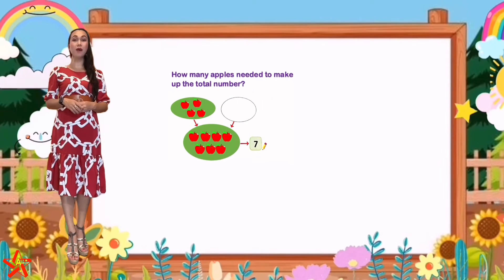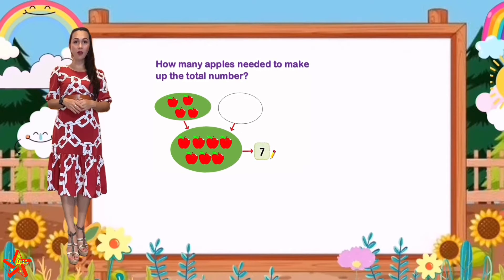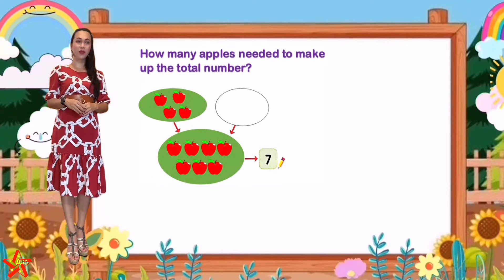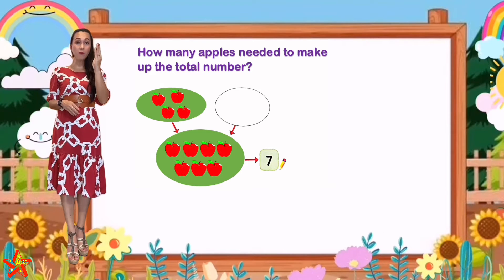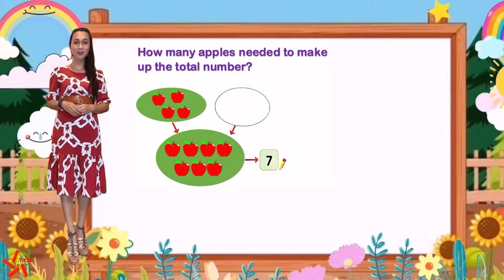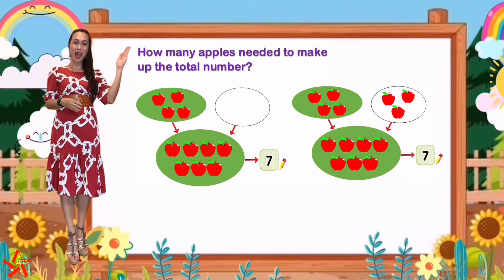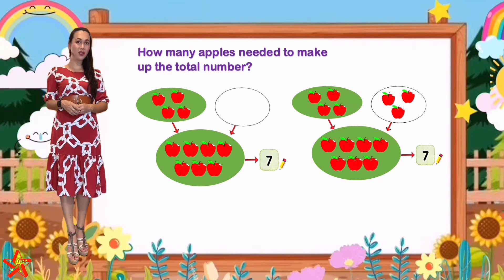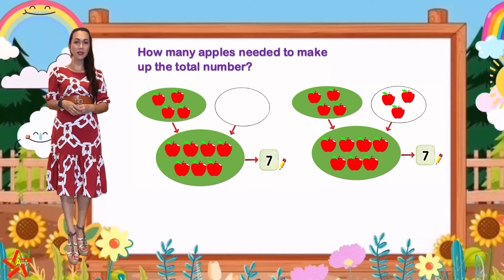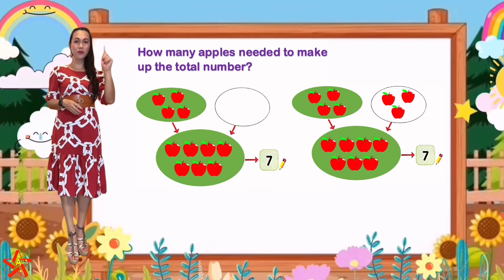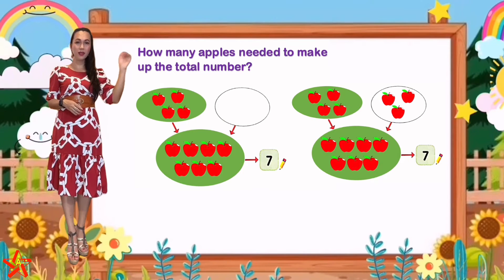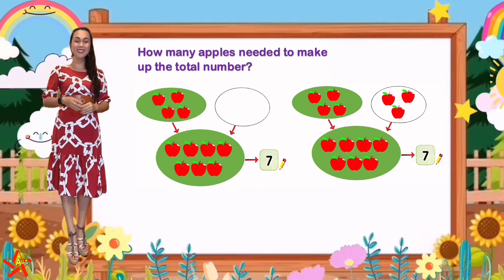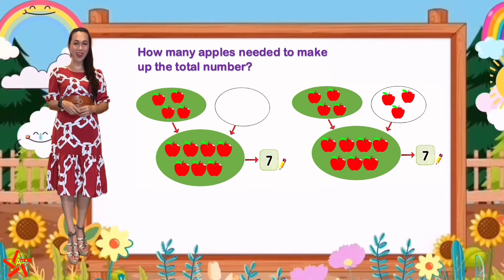Another activity. How many apples are needed to make up the total number? The total number of apples is 7. So what is the missing number? If there are 4 apples, how many apples are missing? Very good — 3 apples. Now, can we check whether our answer is correct or wrong? Let's start counting: 1, 2, 3, 4 and 1, 2, 3. So 4 plus 3 equals 7. Our answer is correct. Well done, kids.